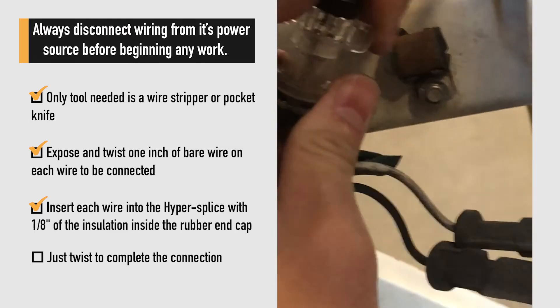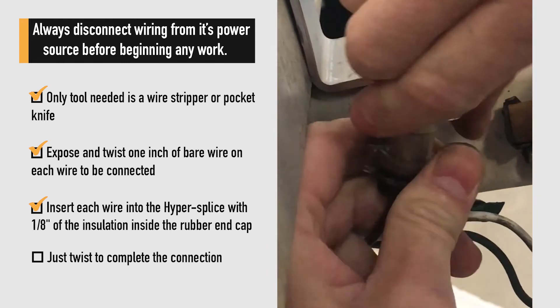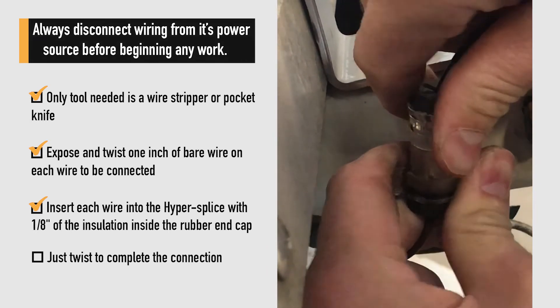Grasp one side of the Hypersplice and hold firmly. With your dominant hand twist the opposing side one and a half to two complete revolutions.